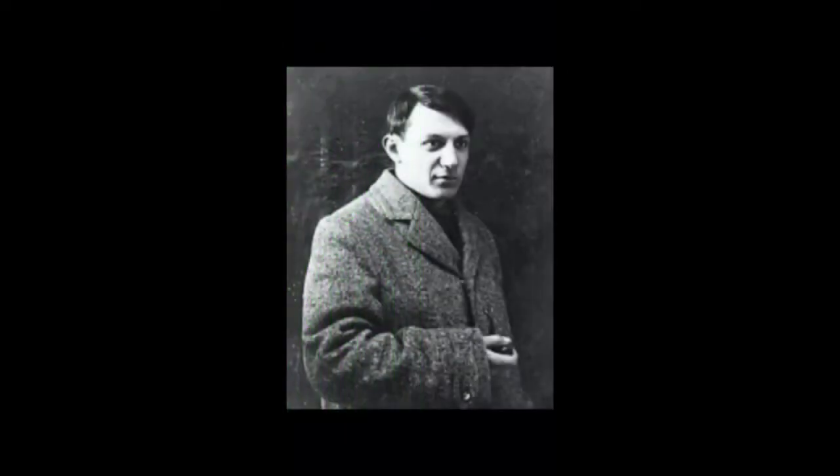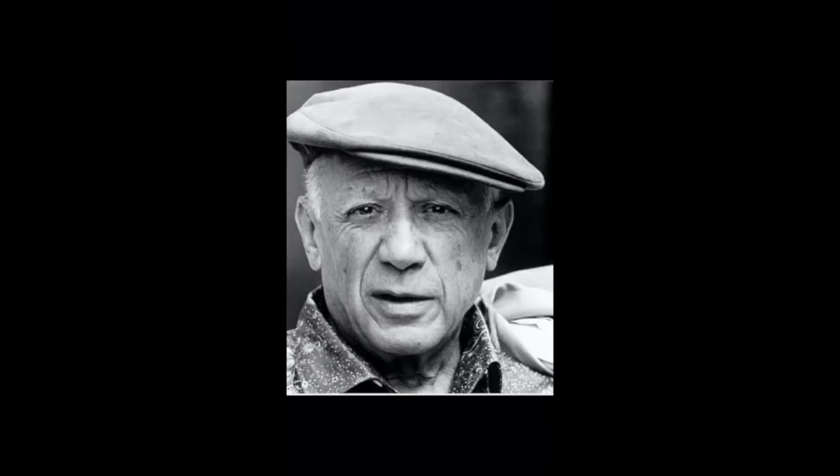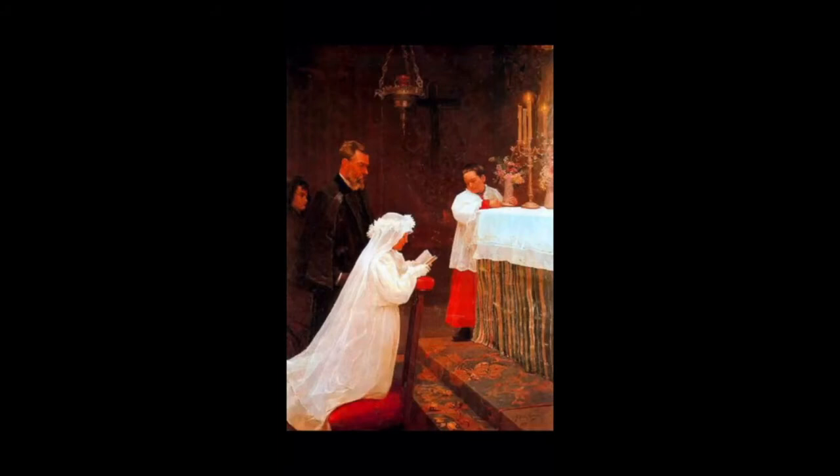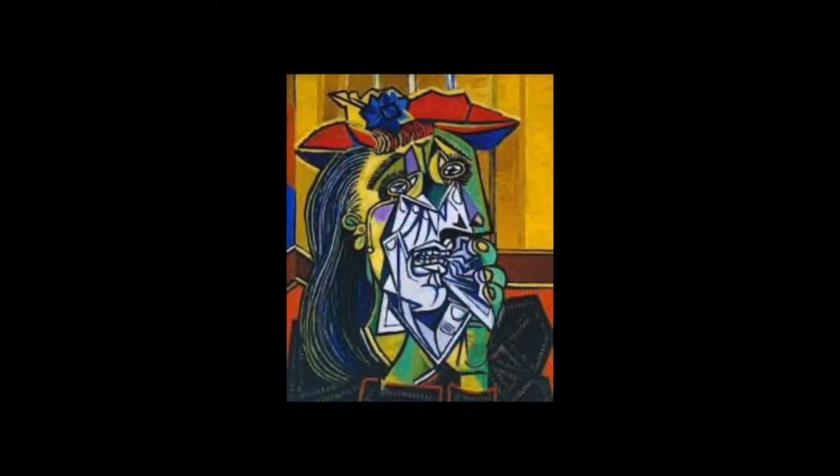Pablo Picasso was born in 1881 in Spain. His full name is 23 words: Pablo Diego José Francisco di Paula Juan Nepomuceno María de los Remedios Cipriano de la Santísima Trinidad Martyr Patricio Clito Ruiz Picasso. He was an artist before he could walk and talk. He had a wonderful father who was also an art teacher. When he was 15 years old, he painted a work called The First Communion. Cubism tries to take an object and look at it from different perspectives, breaking it down into geometrical shapes.